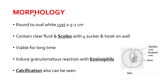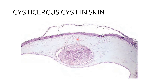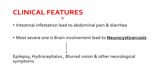The morphology of the lesion induced by Taenia solium: the developed cyst will be 0.5 to 1 centimeter, containing clear fluid. Microscopically it shows the scolex with four suckers and hooks on the wall. It remains viable for a long time and induces a granulomatous reaction, particularly infiltration of eosinophils. Eosinophils are allergic cells found in parasitic infestation patients. If the parasite dies, dystrophic calcification can also be seen. This is the photomicrograph of the cysticercus larval cyst in the skin, showing suckers and hooks.